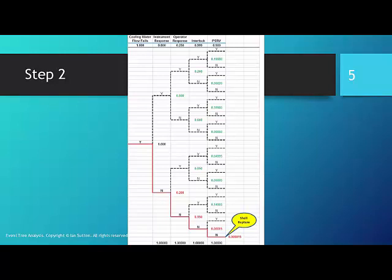We multiply these numbers together, like an AND gate in a fault tree, and come up with a final value of 0.00015. We are saying, therefore, that if the cooling water fails, the chance of a vessel rupture is 1 in 67,000.